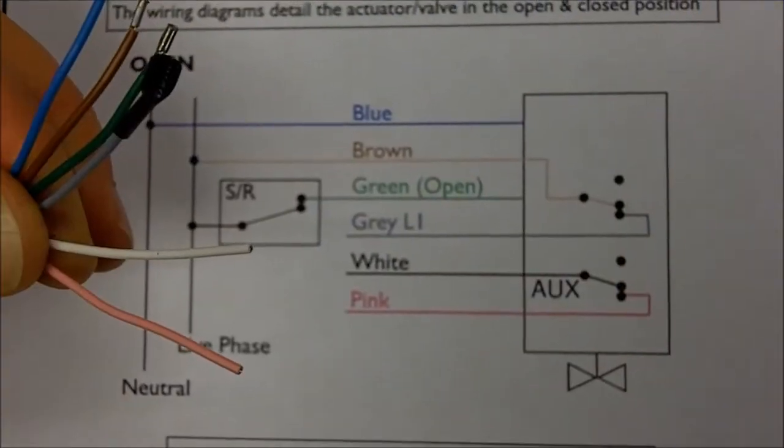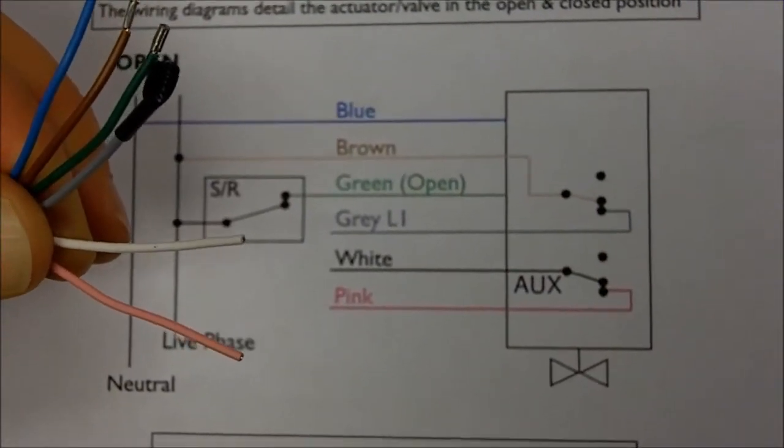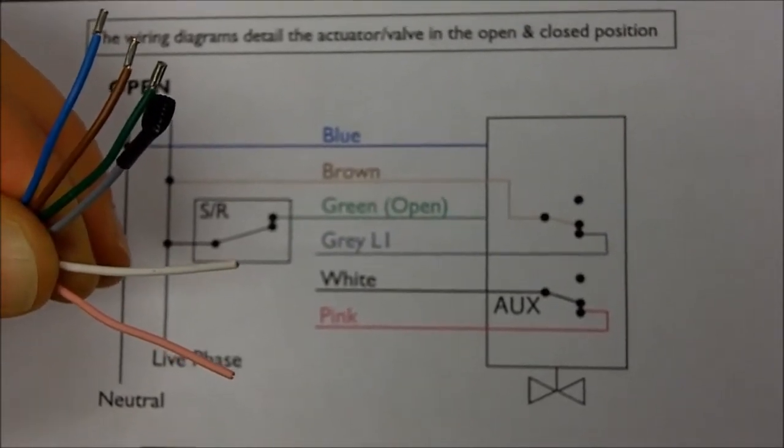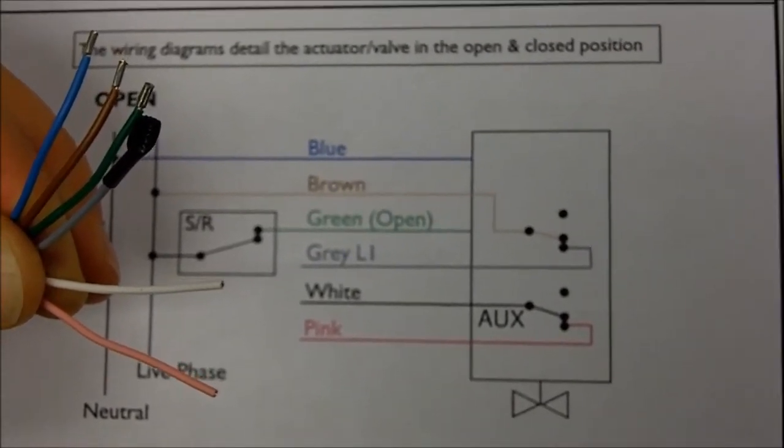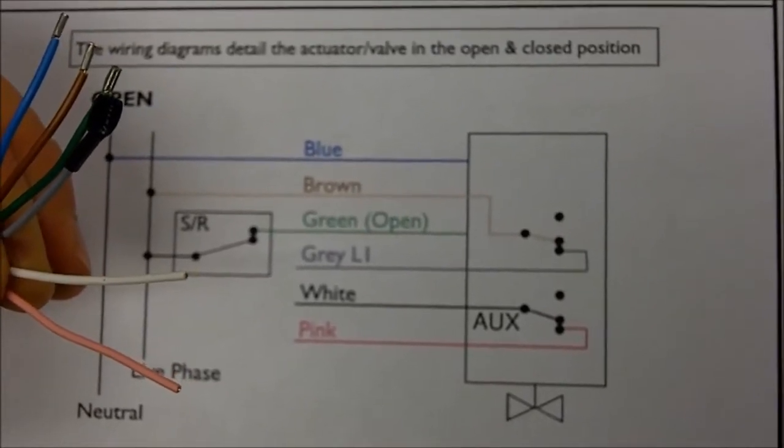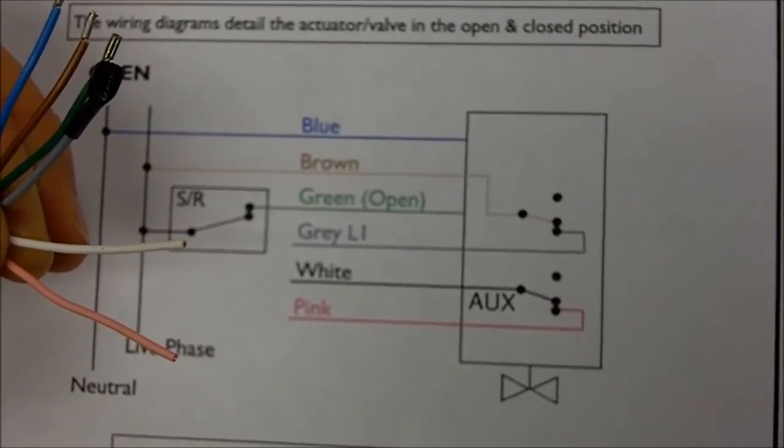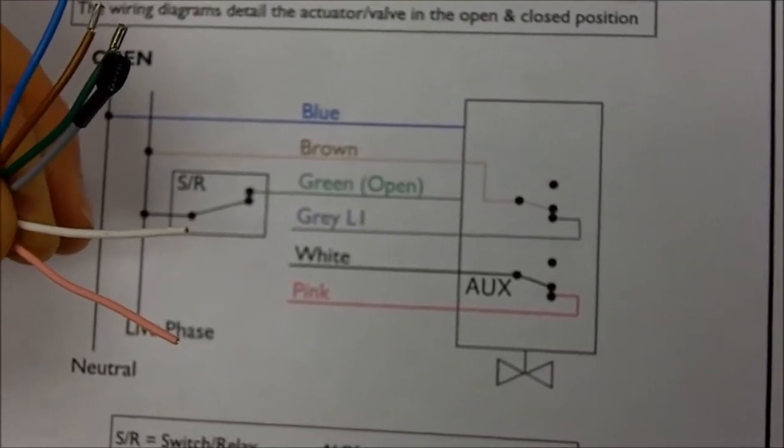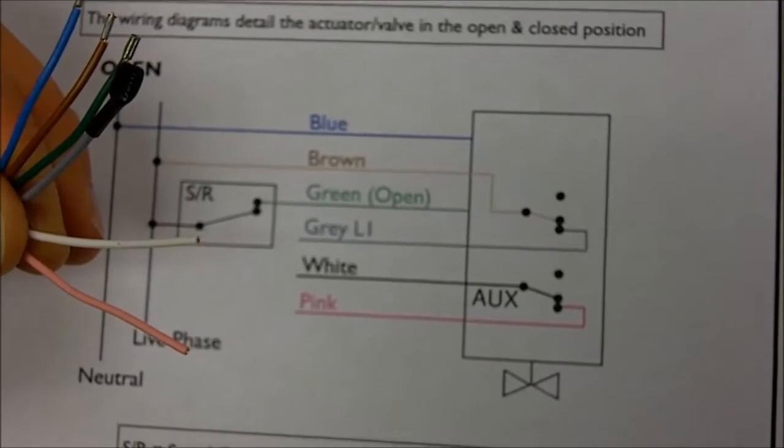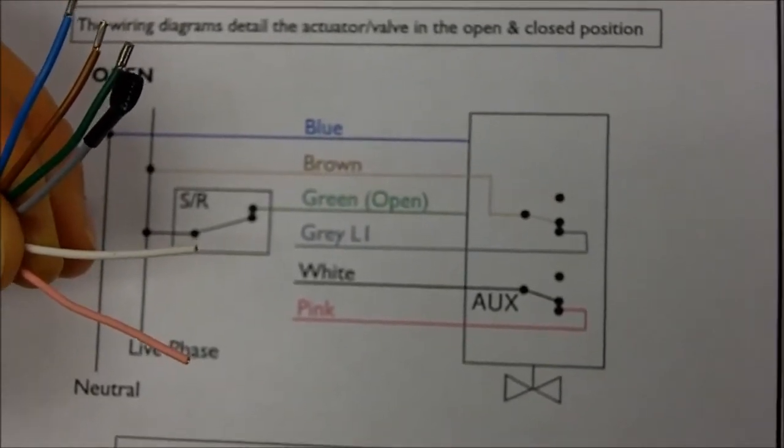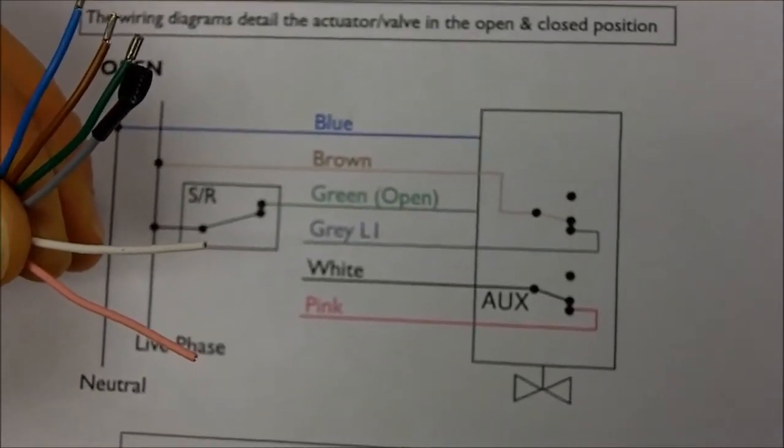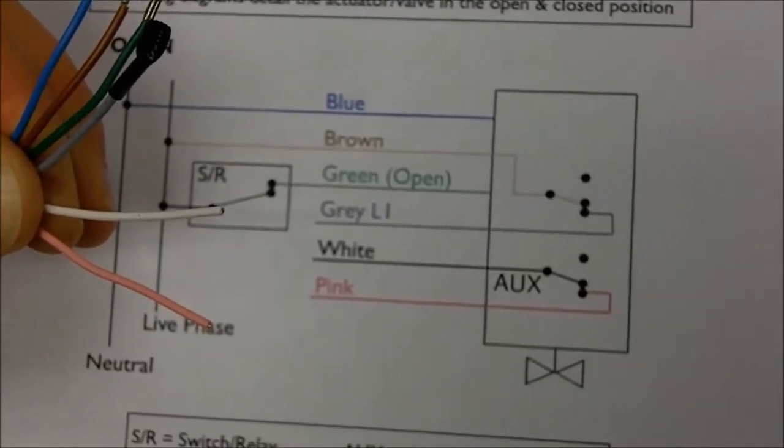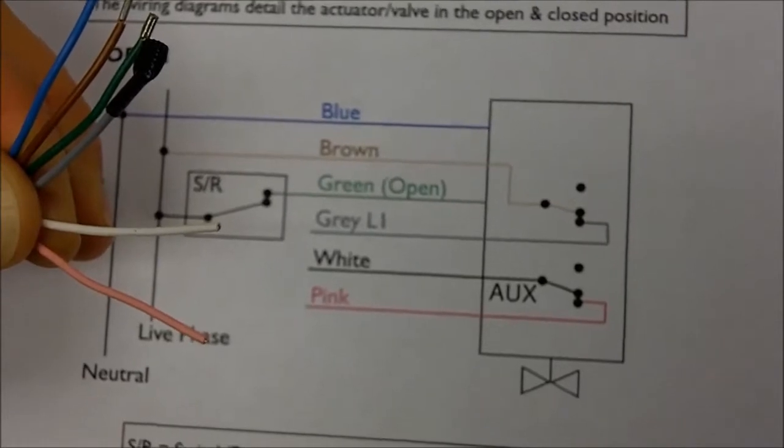The Synthese actuators are supplied with a colour-coded wiring system. When wiring for two-point control, the blue wire is the neutral. The brown wire is the permanent live. The green wire is the switched live or open position control. The grey wire is a live feedback which can go to a pump. White and pink wires are for the auxiliary microswitch.